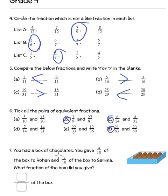You had a box of chocolates. You gave 4 by 10 of them to Rohan and 3 by 10 to Samina. What fraction of the box did you give? So you gave 4 by 10 plus 3 by 10.